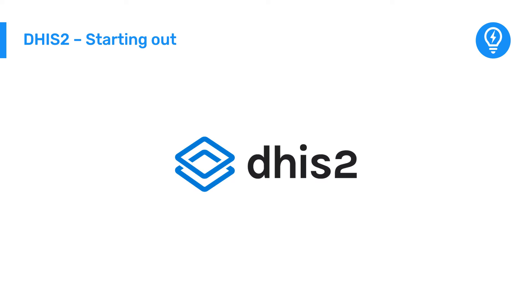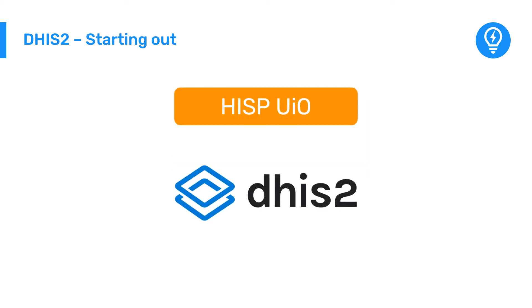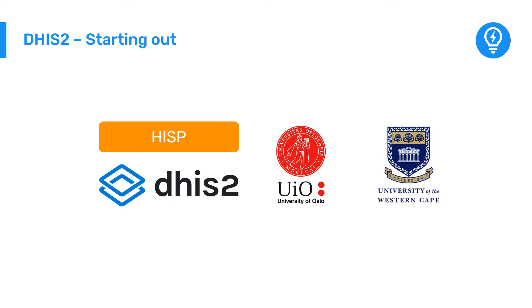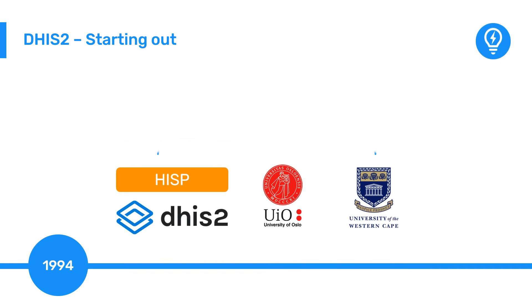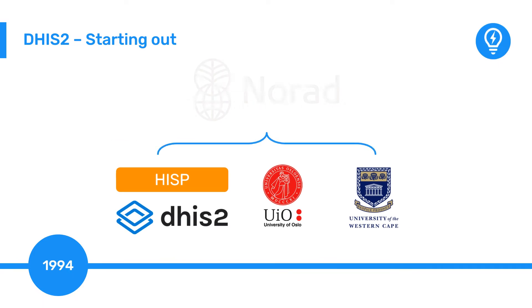DHIS-2 is a product of the HISP Center at the University of Oslo, also known as HISP-UIO. HISP is a global action research network initiated jointly by the University of Oslo and the University of the Western Cape in South Africa in 1994, with funding from the Norwegian Agency for Development Corporation, NORAD.